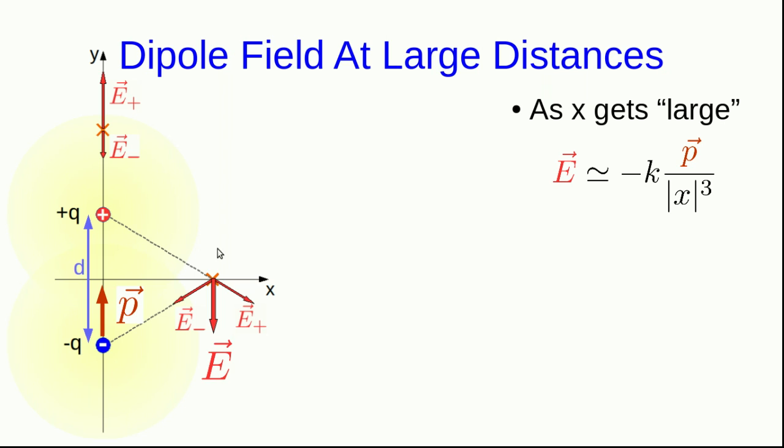Well, each of the contributions, E-plus and E-minus, are falling off as 1 over distance squared. However, if you think about how they are oriented relative to each other as you look at larger and larger distances from the dipole, you see that they get closer and closer to pointing in exactly opposite directions. And so they're cancelling each other out to a larger and larger extent. That's why the dipole field falls off faster, 1 over distance cubed, than the field due to an individual charge, which falls off as 1 over distance squared. Because there's this extra cancellation going on.